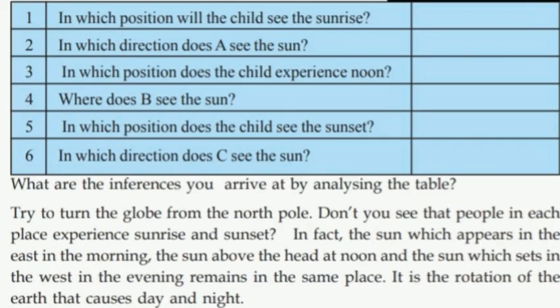In which position will the child see the sunrise? A is at the top with east at the left. In which direction does A see the sun? A sees the sunrise in the east.